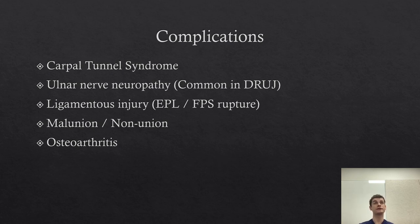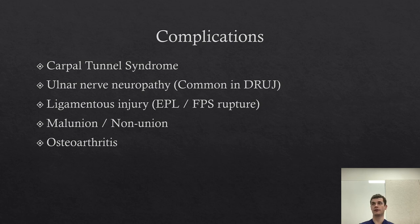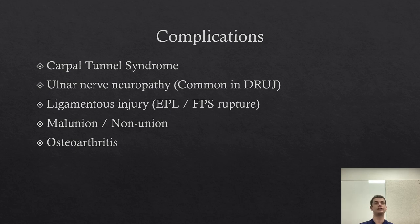As with any fracture, there is a risk of malunion or nonunion, and appropriate pre- and post-reduction films or intraoperative imaging help ensure reasonable reduction to reduce those risks. Because this is a very well-utilised joint, any fracture not appropriately reduced increases the risk of osteoarthritis in the future, which can be quite debilitating. This is why in younger patients, where there is not a completely satisfactory reduction with non-operative management, you may lean towards operative fixation to maintain appropriate joint alignment and reduce stress areas.